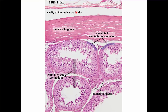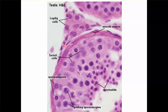You can see the cavity of the tunica vaginalis — the two layers, tunica parietalis and tunica visceral layer. This is tunica albuginea. These are convoluted seminiferous tubules. You can see the seminiferous epithelium here. In between the seminiferous tubules you can see the interstitial tissue which has cells of Leydig which secrete testosterone.